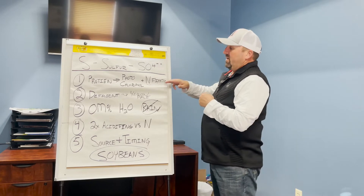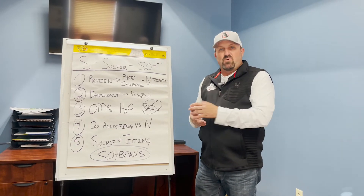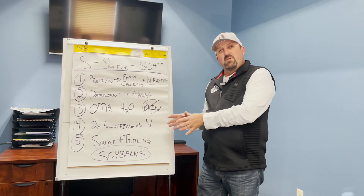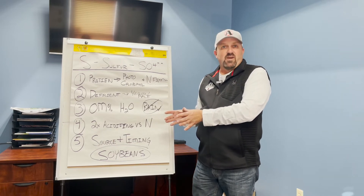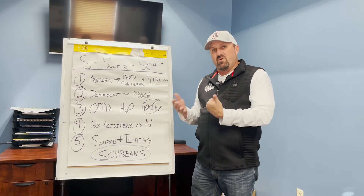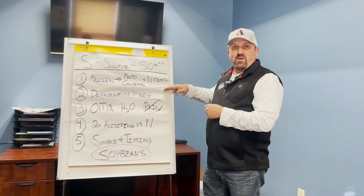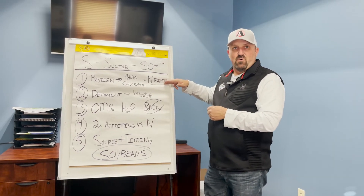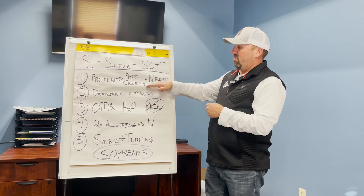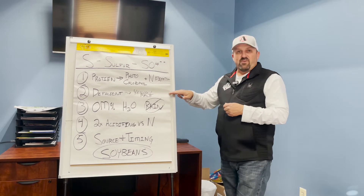Sulfur and nitrogen work hand in hand, which is why you see a lot of blended products — AMS, 21-0-0-24, 28-0-0-5 liquid, or products blended with thiosol. We like that ratio because the two work together for good green plants and chlorophyll production.